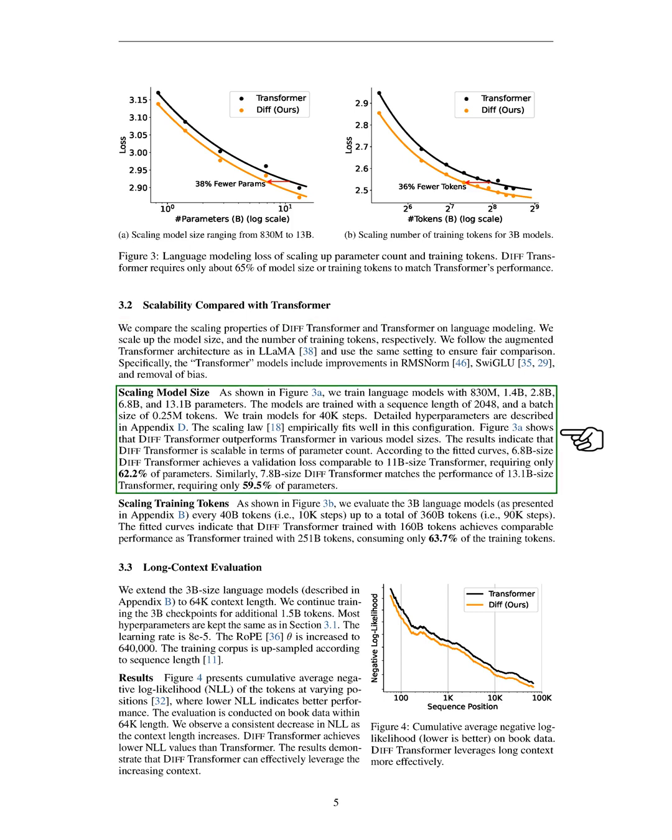Our findings show that DIFF transformer outperforms transformer across different sizes. For instance, the 6.8 billion parameter DIFF transformer achieves a validation loss similar to the 11 billion parameter transformer, using only about 62.2% of the parameters. Similarly, the 7.8 billion parameter DIFF transformer matches the performance of the 13.1 billion parameter transformer with just 59.5% of the parameters.